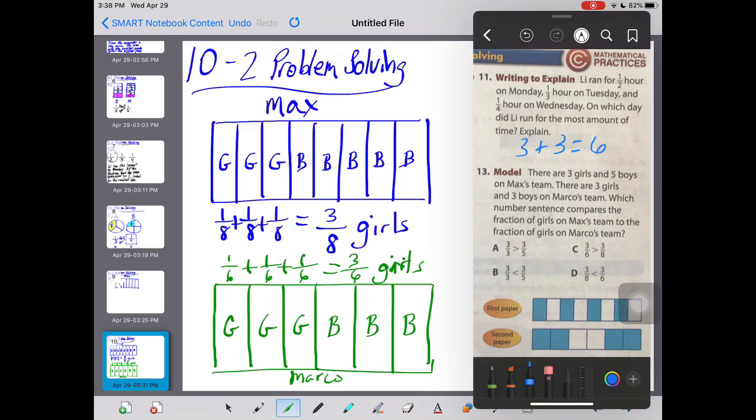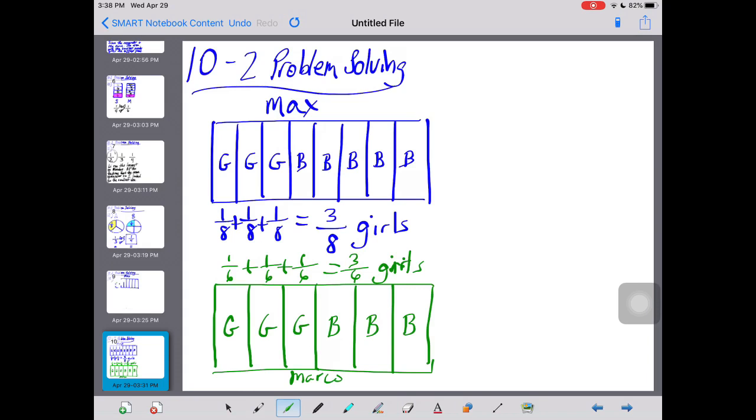So we're comparing three eighths against three sixths. So we have three eighths against three sixths. Which one's larger? Well, remember, the numerator are the same, three parts against three parts, so they're the same. So we can look at the denominator. And when the denominator is smaller in fractions, that means it's larger individual pieces. So three out of the six pieces is going to be bigger than three out of the eight pieces. So we're going to have that alligator facing the three sixths.